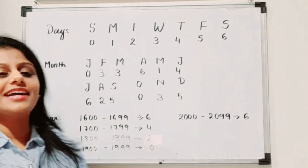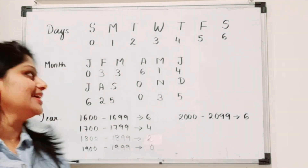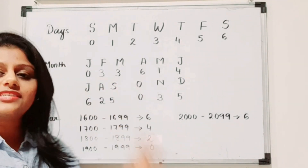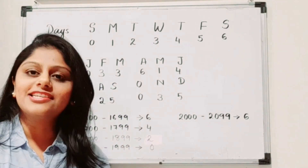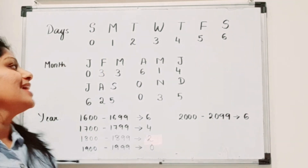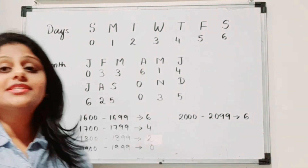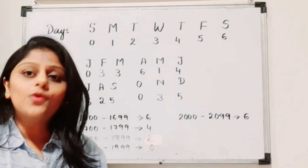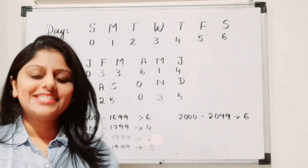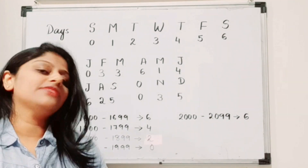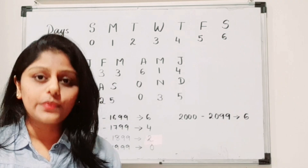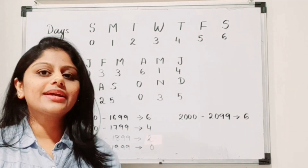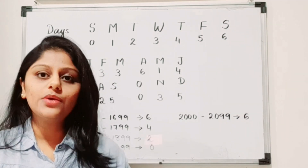To recap all the codes: for days, Sunday through Saturday is 0 to 6. For months, the first three months get 0, 3, 3; the last three get 0, 3, 5; the middle two groups get 6, 1, 4 and 6, 2, 5. Century codes run 6, 4, 2, 0, and back to 6. Whenever you get a question, just write down these codes quickly and use them to solve it.